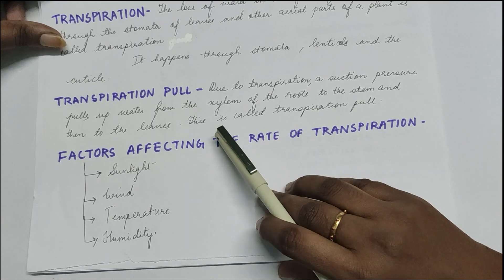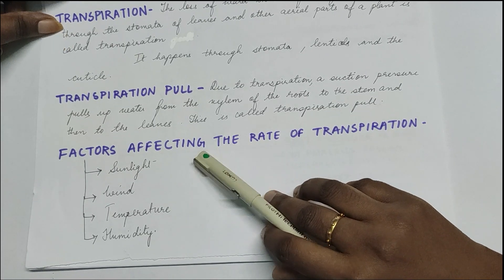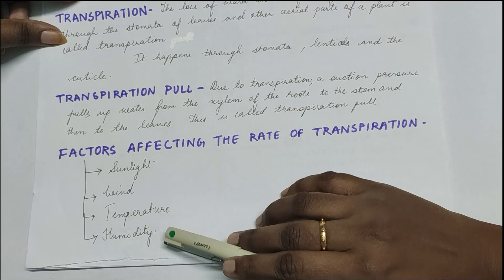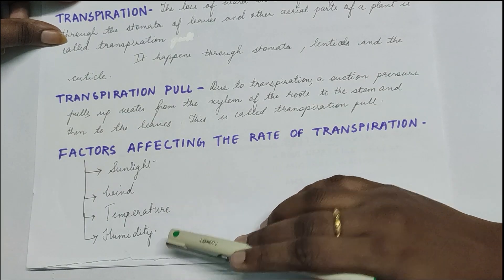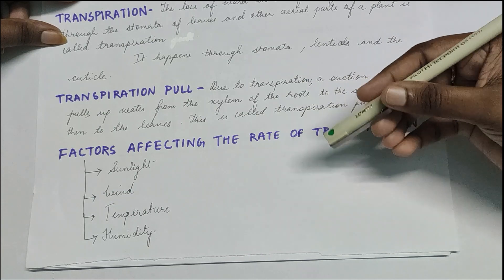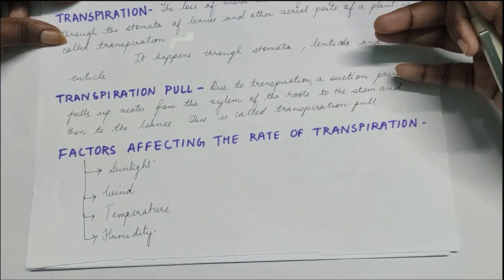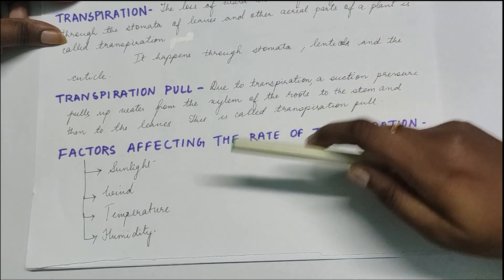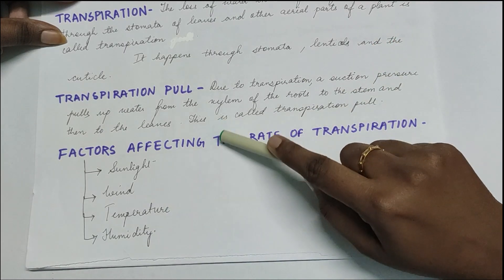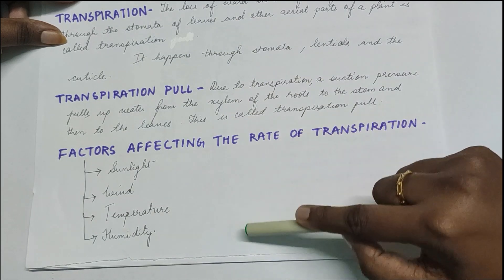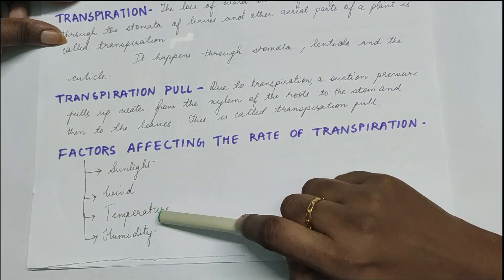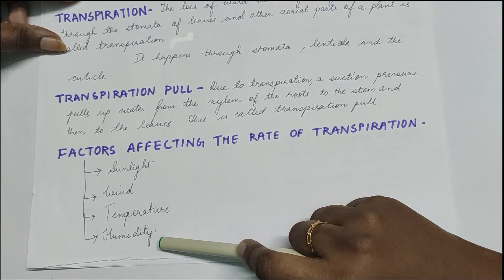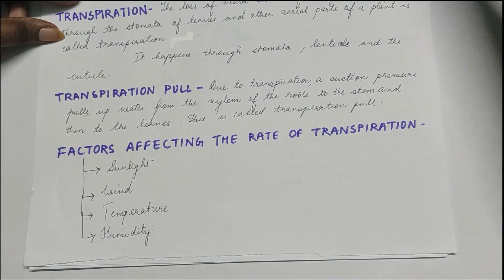But there is an optimum limit of temperature as well. And humidity - if like during rainy season we say that humidity is more, if air is having more humidity or more water vapor in it, then the transpiration will become slow or less. So here, direct relationship with sunlight and temperature, but indirect with humidity.